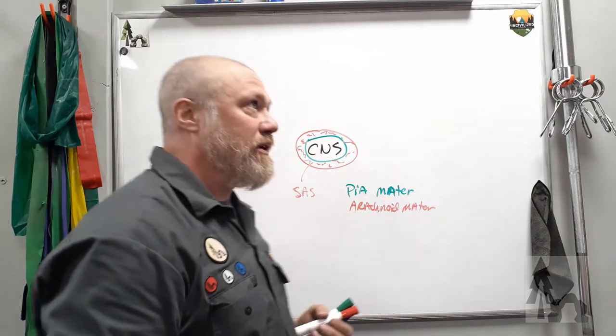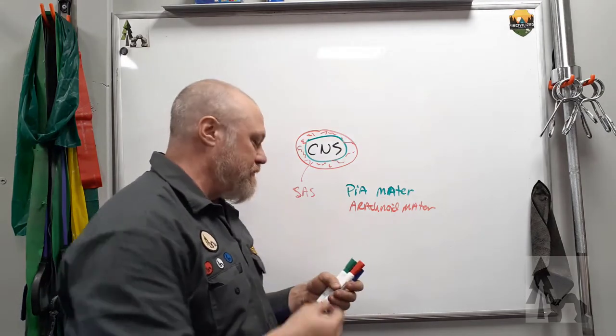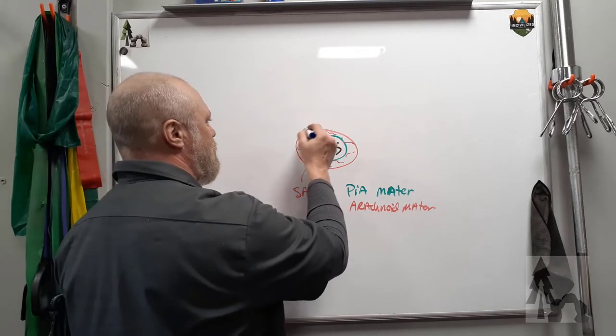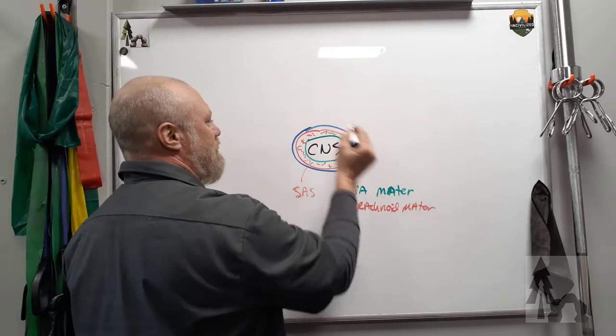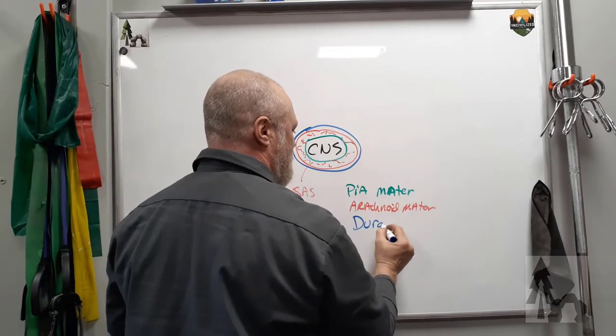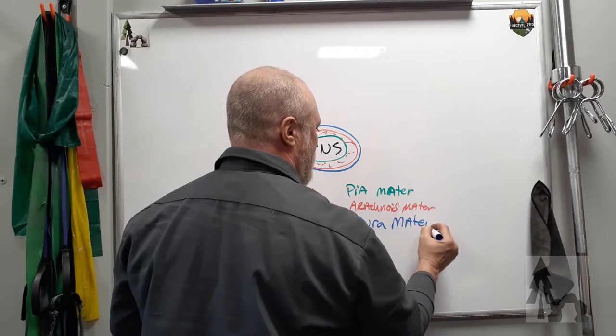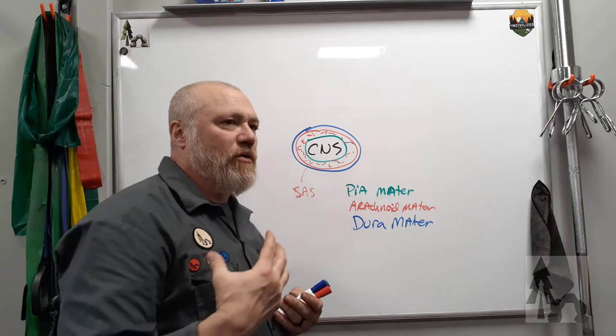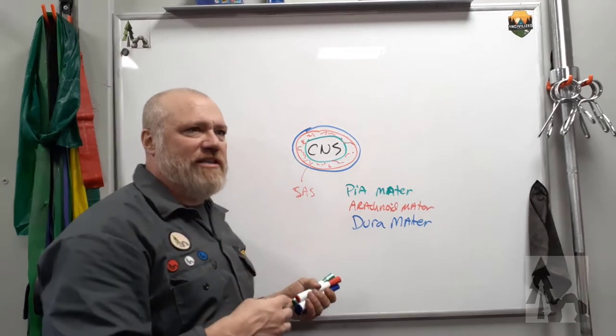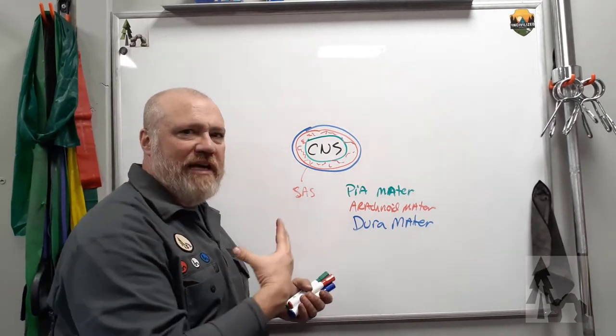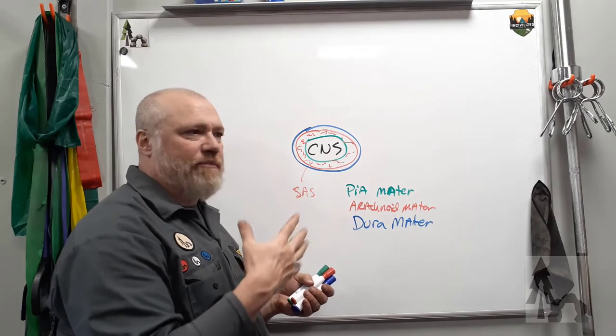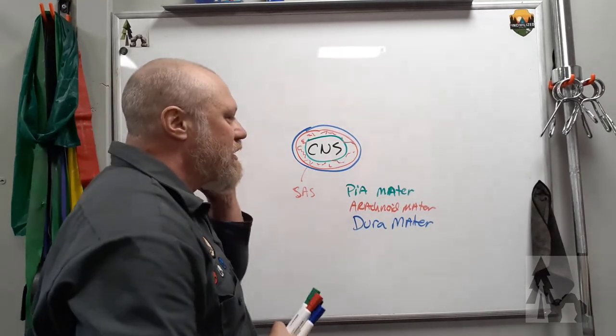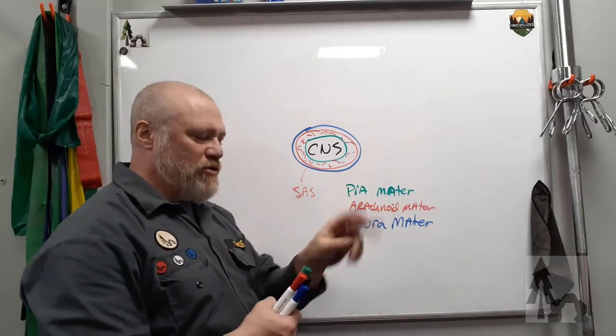That'll be important in the next video. And then over top of all of that, adhered to the arachnoid, you've got the dura mater, the tough mother. The dura mater is pain-sensitive and innervated. So when you get meningeal or some headaches, vascular headaches, it's because the meningeal arteries that supply the dura are causing problems.